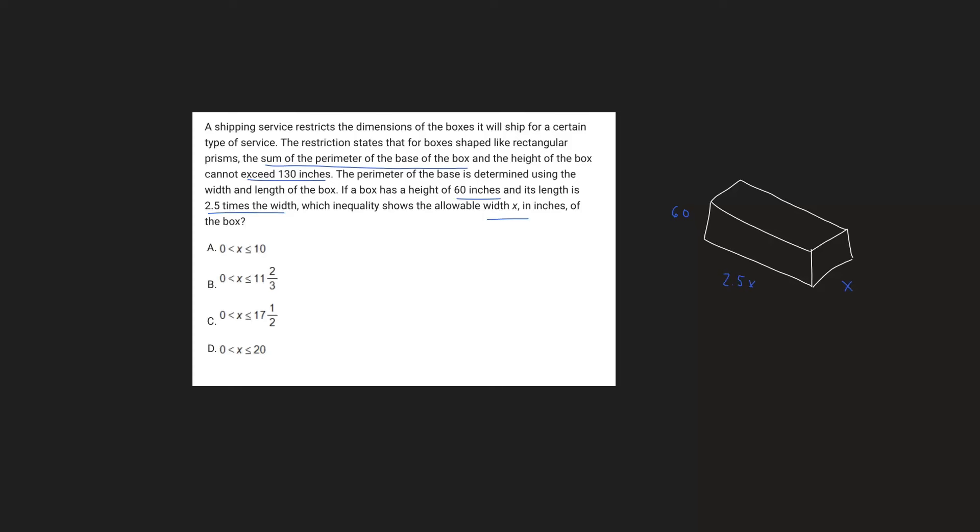And now what we need to do is set up our inequality. So let's write out 130 because it cannot exceed 130. Therefore, I'm going to write the sign like this, but it can be equal to 130, it just can't exceed 130. So now we need to find what the restriction actually is for the 130 inches. Well, it says it's the sum of the perimeter of the base of the box and the height of the box.